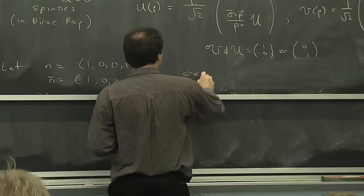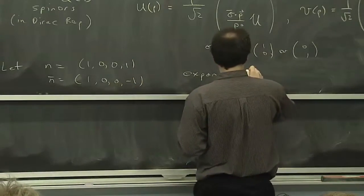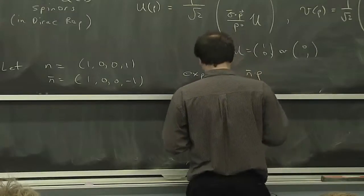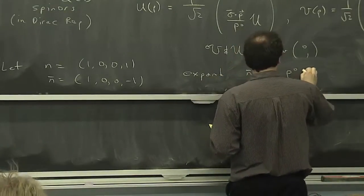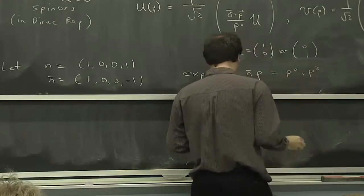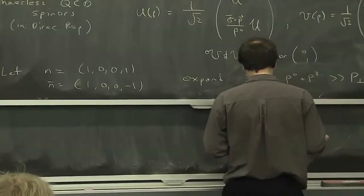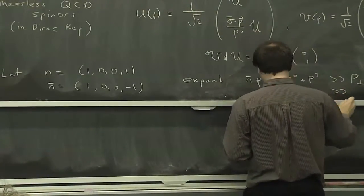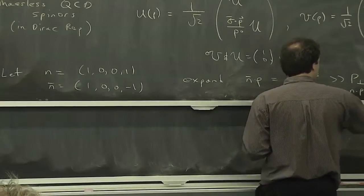And we just expand. Whether I put the plus or minus 1 there or there, it doesn't really matter. Let's expand in n bar dot P, which in this case is P0 plus P3 being much greater than P perp, which is P1 and P2. And then that's much greater than n dot P, which is P0 minus P3.